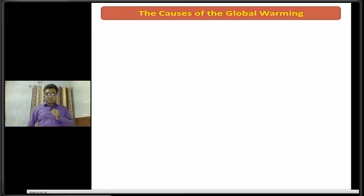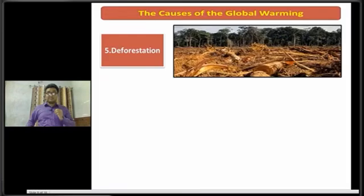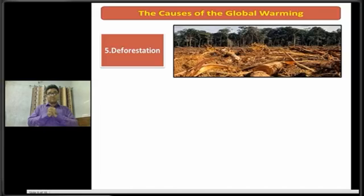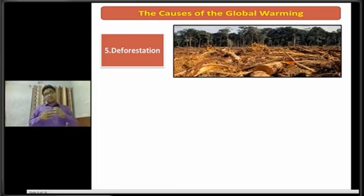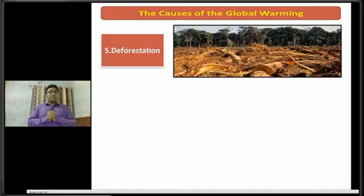Dear students, now I am going to discuss about the next cause, that is deforestation. Basically, deforestation is the process of converting forest into barren land. Due to natural and man-made causes, the area of forest in the world is being reduced day by day. Trees absorb carbon dioxide, so the lack of forests and trees is one of the causes of global warming.